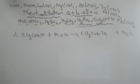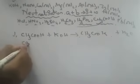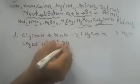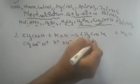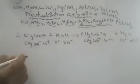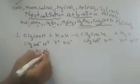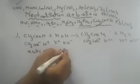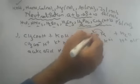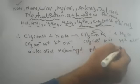Now the ionic equation: CH₃COO minus, H plus, K plus, OH minus — gives CH₃COO minus, K plus, and H plus OH minus cancel to give water. This acid is acetic acid or ethanoic acid, the base is potassium hydroxide, and the salt formed is potassium acetate, plus water.